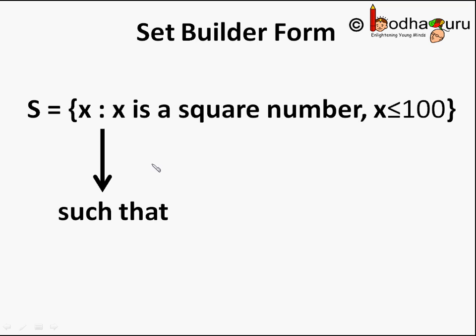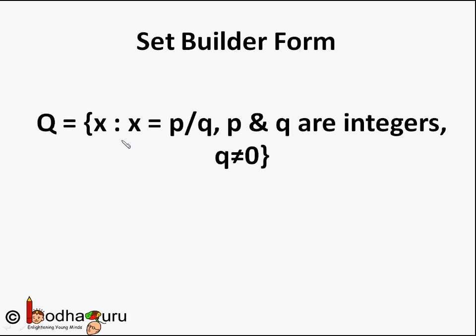We can list more than one property of elements. For example, say set S is a set of square numbers till 100. We can write it like this: S equals curly brace X colon X is a square number, X less than or equal to 100, curly brace close. It means S is a set of elements X such that X is a square number and X is less than or equal to 100. When we write multiple properties like this, every property has to be true. Same way, a set of rational numbers is denoted by Q: Q equals curly brace X colon X equals P by Q, P and Q are integers, Q is not equal to 0.